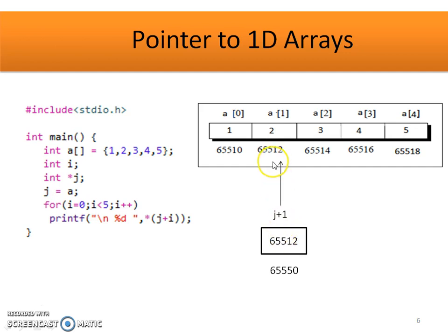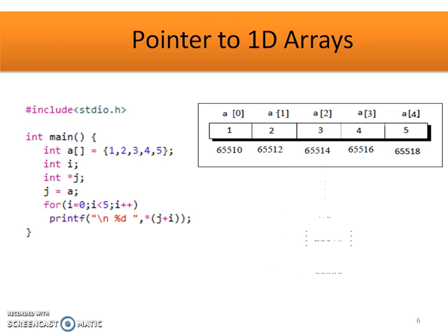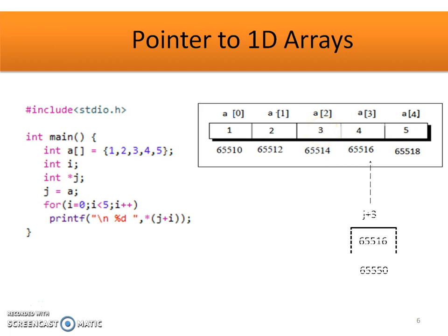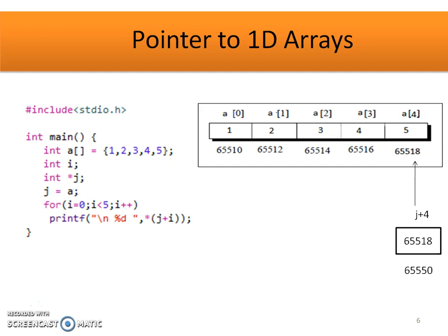At this point, it is pointing to index 1 holding value 2, so the printf statement displays 2. For j plus 2, it goes to next address location 65514 and displays the value at index position 2. In this way the loop gets executed, and with every iteration the value is displayed. At the end, the output of this program will be 1, 2, 3, 4, 5.